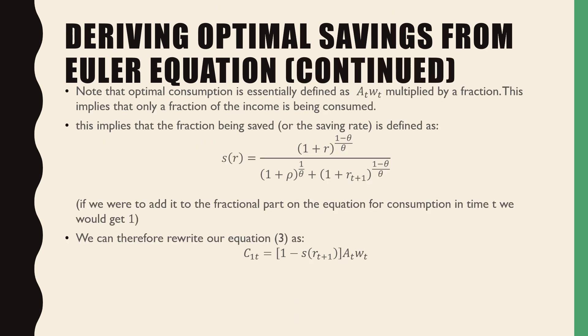Note that the optimal consumption is essentially defined as AtwT multiplied by a fraction. This implies that only a fraction of the income is being consumed. This implies that the fraction being saved, or saving rate, is defined as the following.